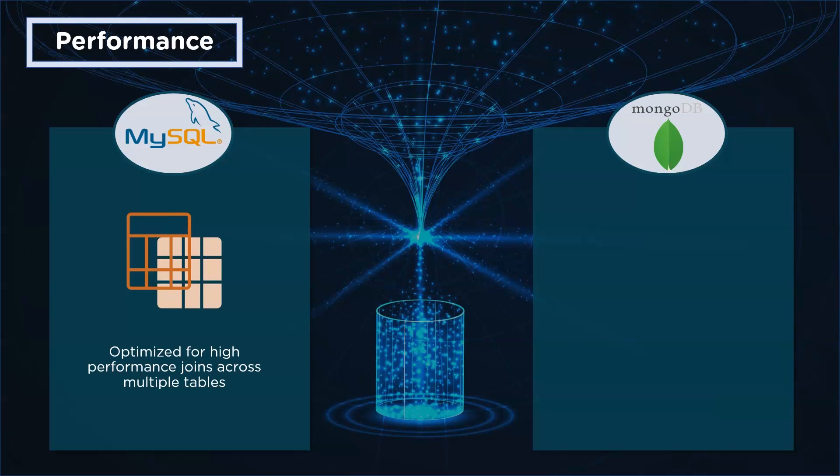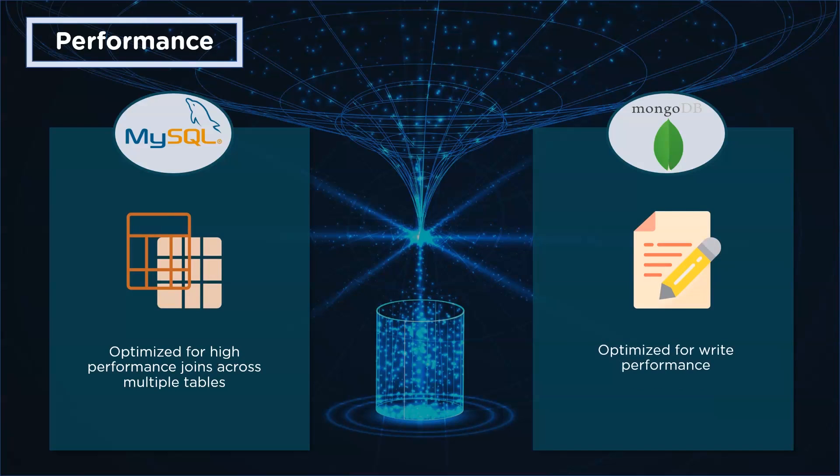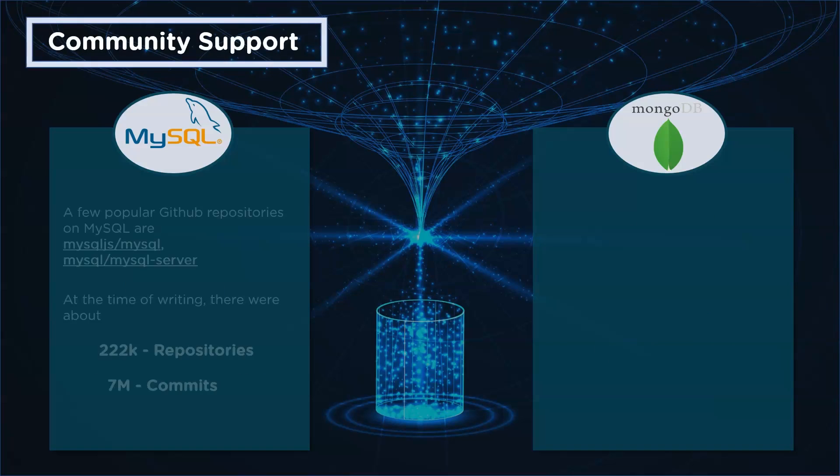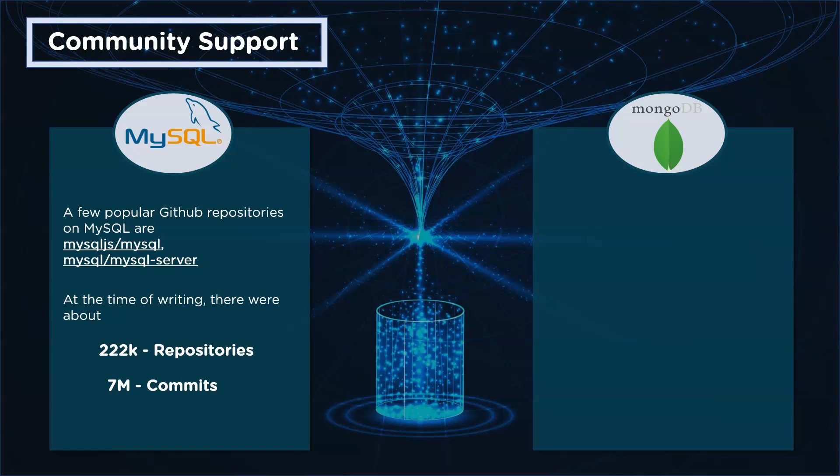Moving ahead, let's look at performance. MySQL is optimized for high-performance joins across multiple tables, while MongoDB is optimized for write performance.